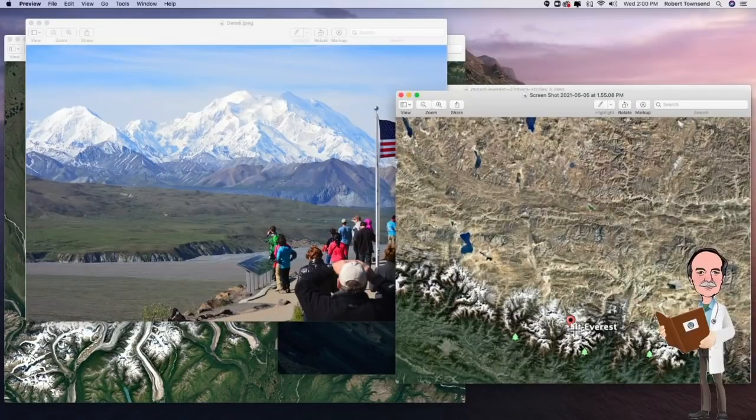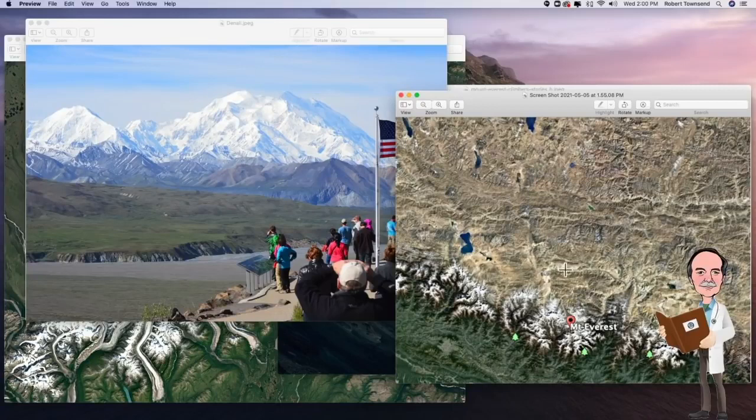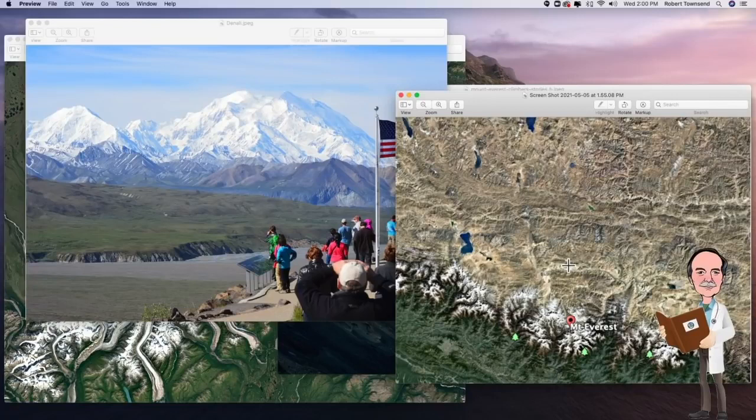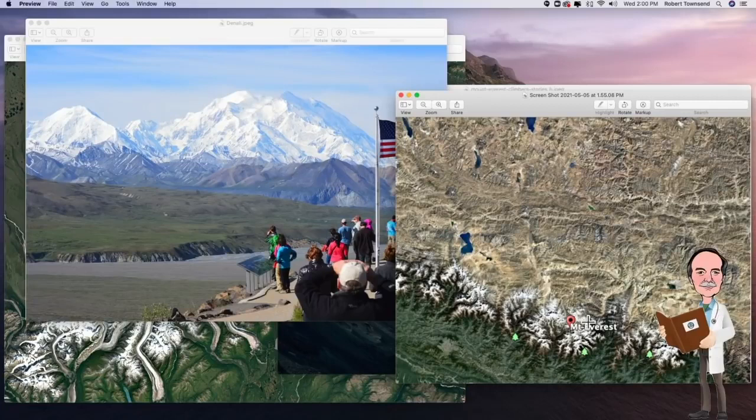However, if you look at Mount Everest, you'll see it sits on the Tibetan Plateau. So, if you're looking south towards Mount Everest from the Tibetan Plateau, you're starting off at an elevation of 16,000 feet, and the mountain appears only 13,000 feet high. That's its vertical relief from this plateau.